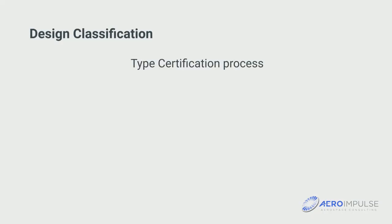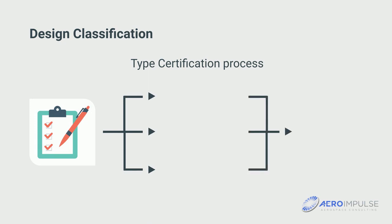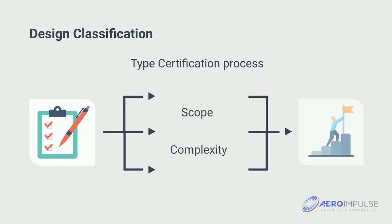At the beginning of a type certification process, the planned activities must be classified. The classification of a design is necessary, because the nature of the certification process depends on the scope and complexity of the planned design activities.